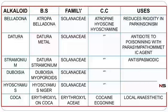In this slide alkaloids are described by their biological source, family, chemical constituents, and uses. For belladonna, the biological source is Atropa belladonna, belonging to the family Solanaceae. The chemical constituents are atropine, hyoscine, and hyoscyamine.